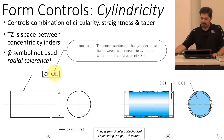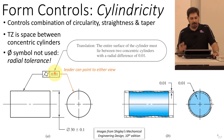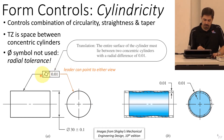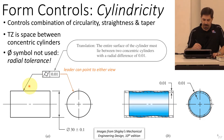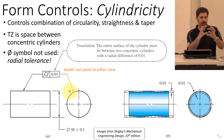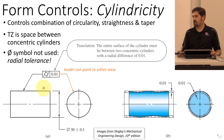The leader can point to either view when using cylindricity — you can point at the end-on view of your cylinder or the side view, and either is acceptable according to the ASME standard. I wanted to give an example of where cylindricity might matter. There are scenarios where it doesn't necessarily matter as much what the cylindrical size is — it matters more how close it is to a perfect cylinder.